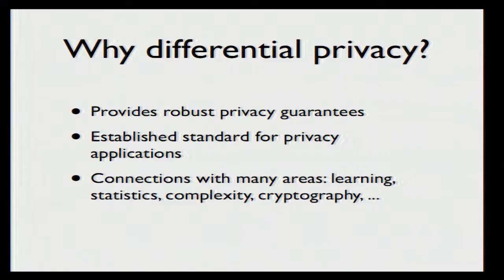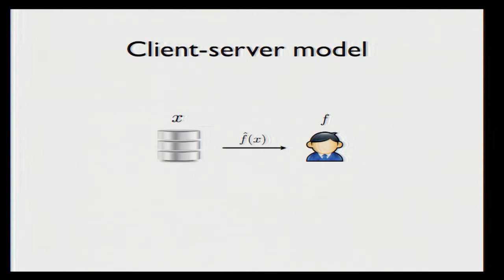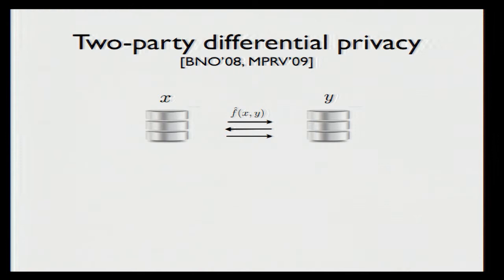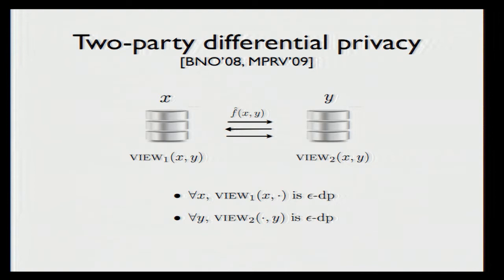The typical model for differential privacy is the client-server model, in which a curator holds a database and issues differentially private answers to the queries of a client. But we also consider the distributed setting, in which the database is distributed between two mutually distrustful parties. In this setting, the mechanism f-hat is an interactive protocol, at the end of which the parties learn a view. We say that the mechanism is differentially private if each of these views can be seen as an epsilon-differentially private mechanism over the inputs of the other party.